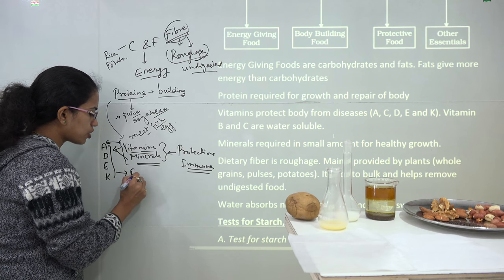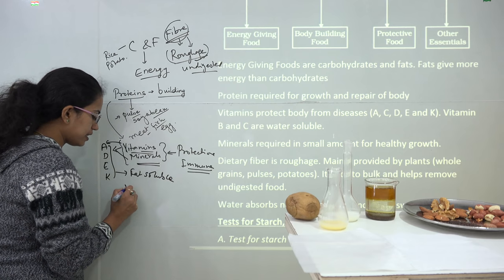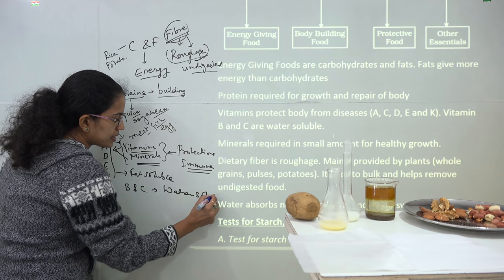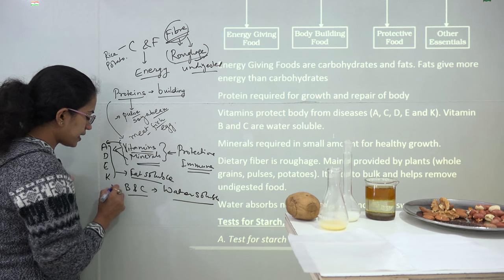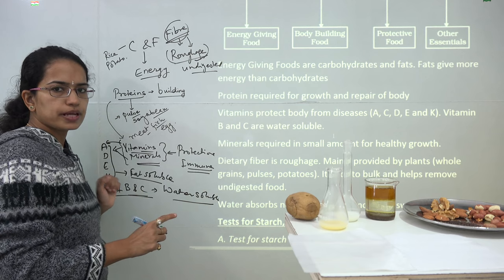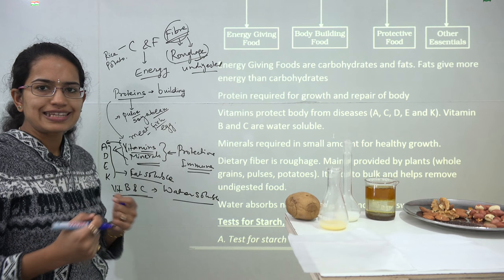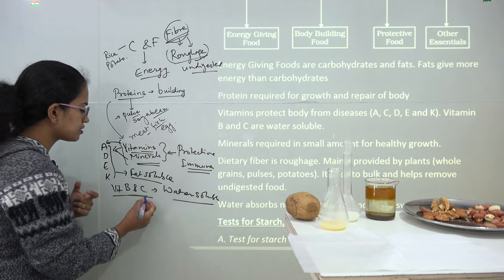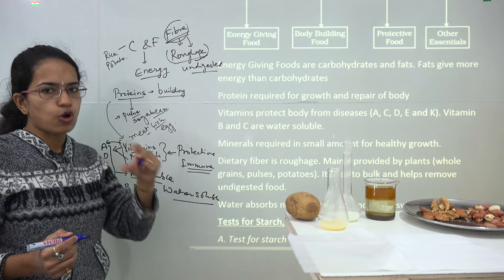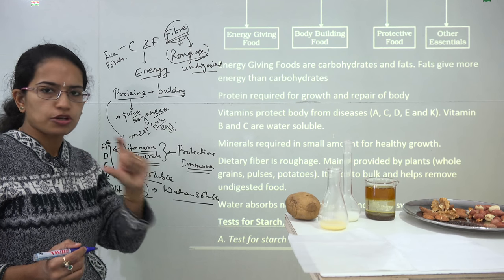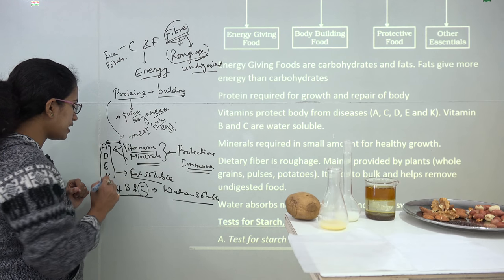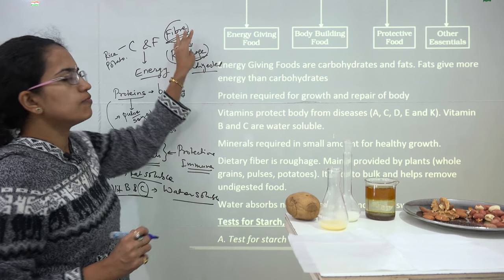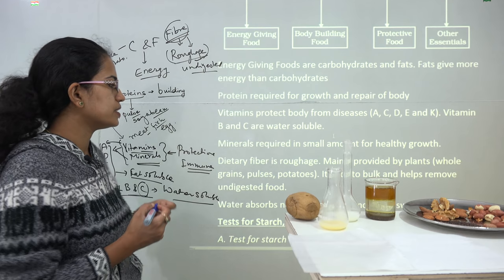Vitamins A, D, E, and K are fat-soluble. Vitamin B and C are water-soluble and dissolve in water very quickly. Green leafy vegetables, lemon juice, orange juice, and citrus fruits are rich in vitamin C. Fibers come from pulses, green leafy vegetables, and grains, and these add to the bulk or volume of the food we intake.